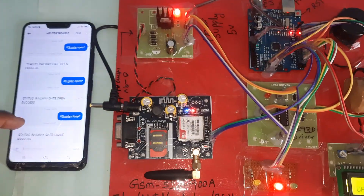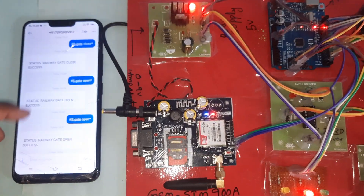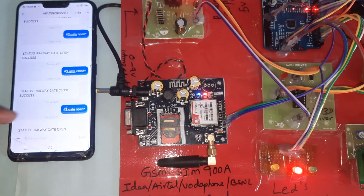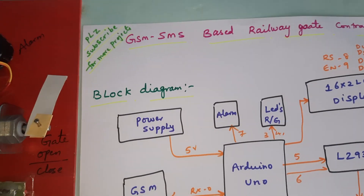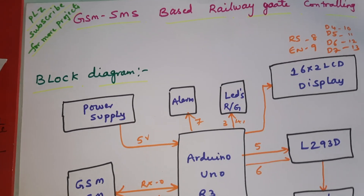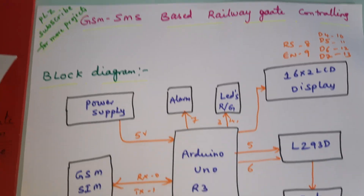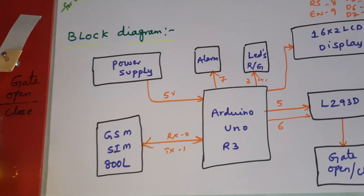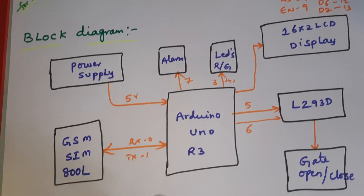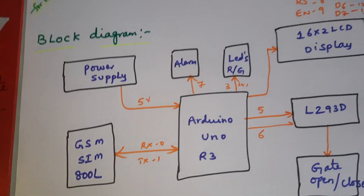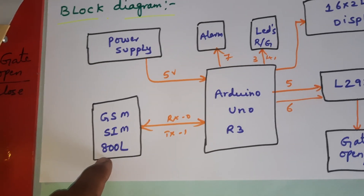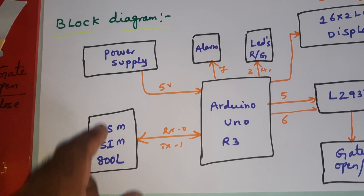We are from SVSM. The project title is GSM SMS Based Railway Gate Control System using Arduino Uno R3 board. In this project we are using Arduino Uno R3 and GSM SIM 900U module.